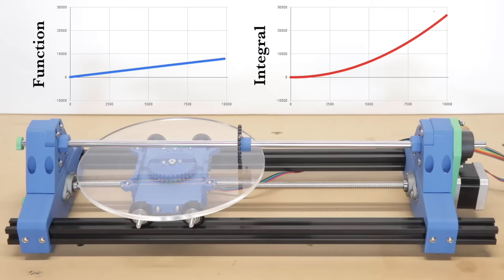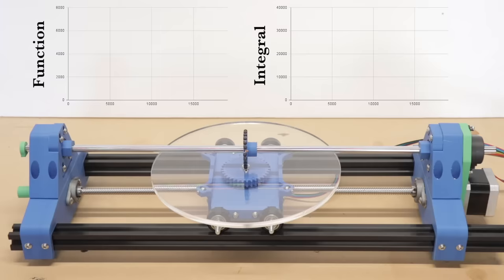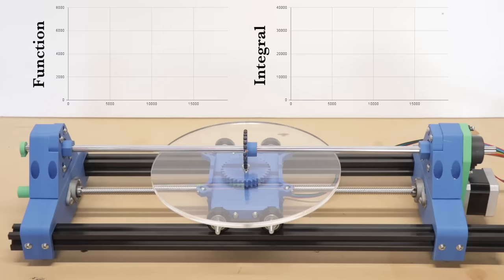Here the integrator is graphing the third degree function that we looked at earlier. The integral over time is a fourth degree polynomial.